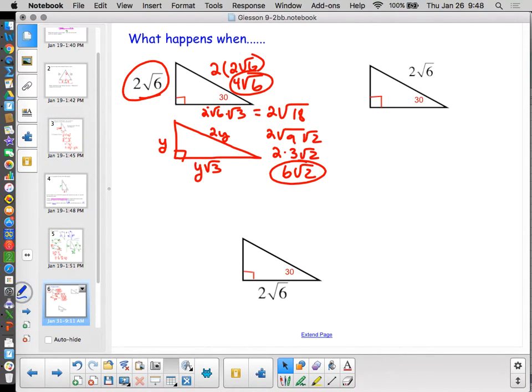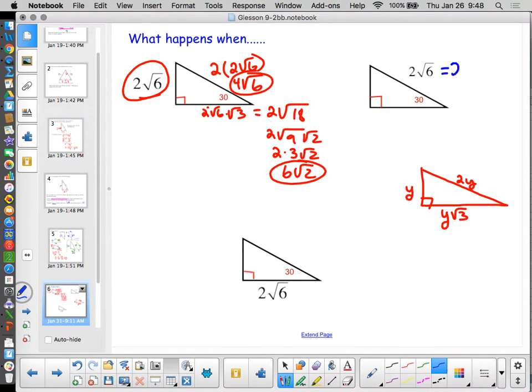So what if the 2 root 6s on the hypotenuse? Well, I've got the same pattern. My pattern triangle still works. Slide it over there. I might slide it down just a little bit. Give myself some space. So now I know that 2y equals 2 root 6. So y, dividing both sides by 2, y equals the square root of 6. And the third side is the square root of 6 times, or y times the square root of 3, which would be the square root of 18, which we just discovered is 3 root 2.